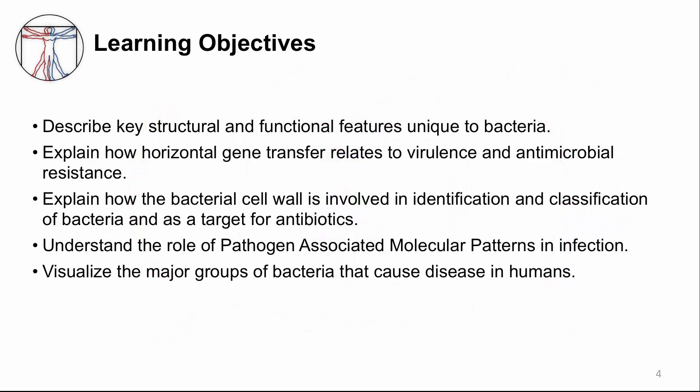The learning objectives are to describe key structural and functional features unique to bacteria, to explain how horizontal gene transfer relates to virulence and antimicrobial resistance, to explain how the bacterial cell wall is involved in identification and classification of bacteria and as a target for antibiotics, to understand the role of pathogen-associated molecular patterns in an infection, and to visualize the major groups of bacteria that cause disease in humans.